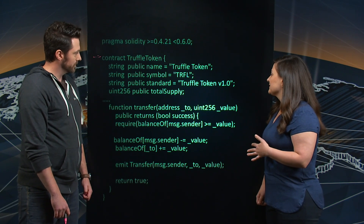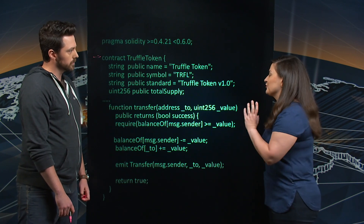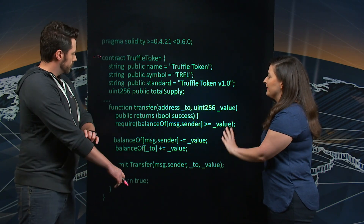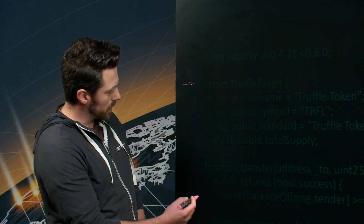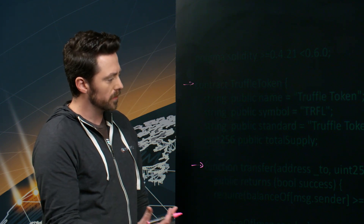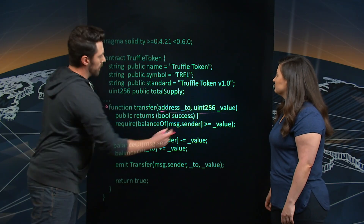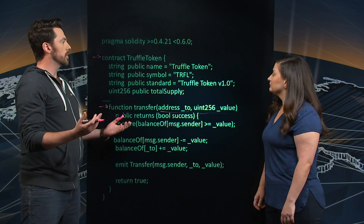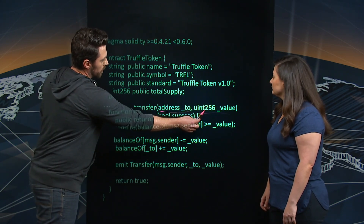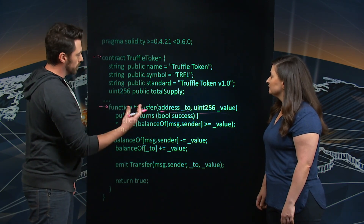This is where the ERC-20 specification plays in, which we define here. Looking at the transfer function itself: you pass in two things — an address and a value. So if we have 10,000 tokens and I want to send 200 to you, Lana, I put 200 in for the value and then your account address to say I want to give 200 to you.